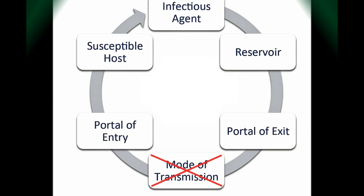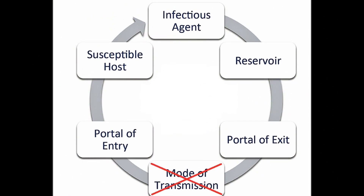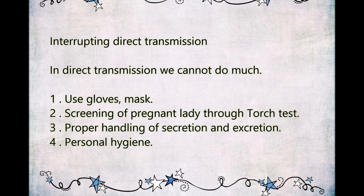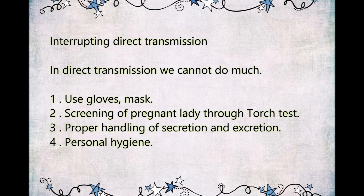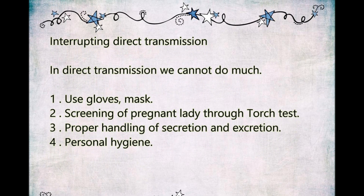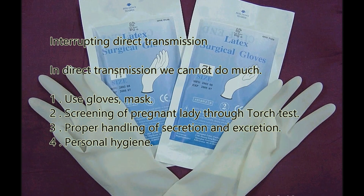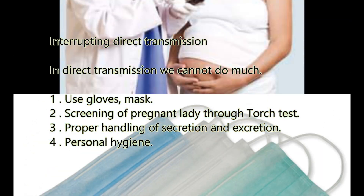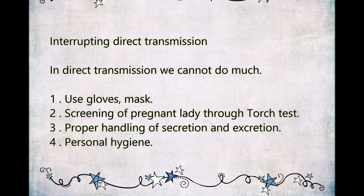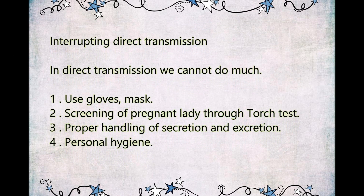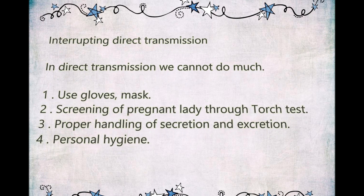Breaking the chain of transmission by interrupting the mode of transmission, which is of two types: direct and indirect. Interrupting direct transmission: We can do it by using gloves and masks, by doing screening of pregnant ladies through the TORCH test, by proper handling of secretions and excretions, and by maintaining personal hygiene.